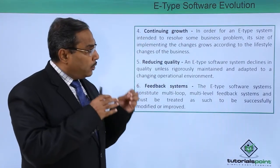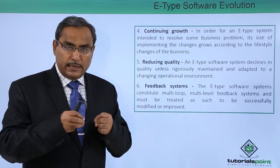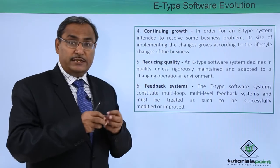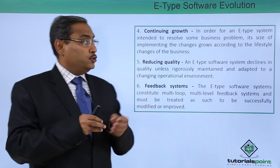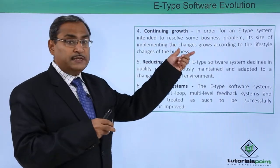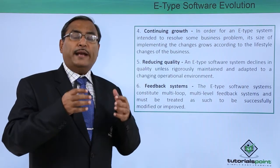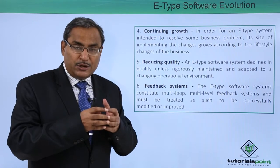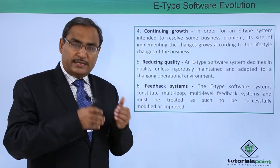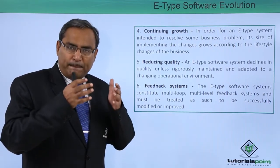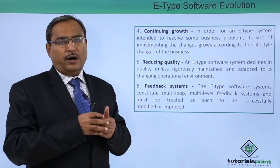The fourth law is continuing growth. In order for an E-type system intended to resolve some business problems, its size of implementing change grows according to the lifestyle change of the business. A new wing may get introduced in the existing business, and as a result, whenever a particular software is going to implement those changes, the volume of that implementation will be directly proportional to the lifestyle change of the business.